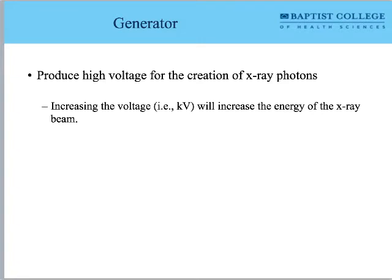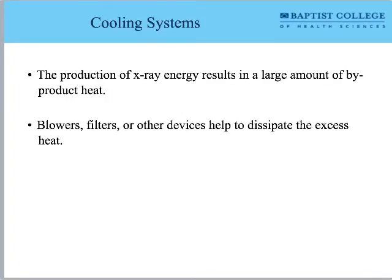We need a generator to provide high-voltage power for x-ray photons. We want to increase the voltage into the kilovolt range using transformers to increase the energy range of the x-ray beam into the diagnostic range — where the photoelectric interaction can occur. We need cooling systems because the x-ray tube is essentially a giant toaster: over 99% of what it produces is heat, so we have blowers, filters, and all sorts of devices to dissipate the excess heat. When you've done a few CT scans, that room gets hot.